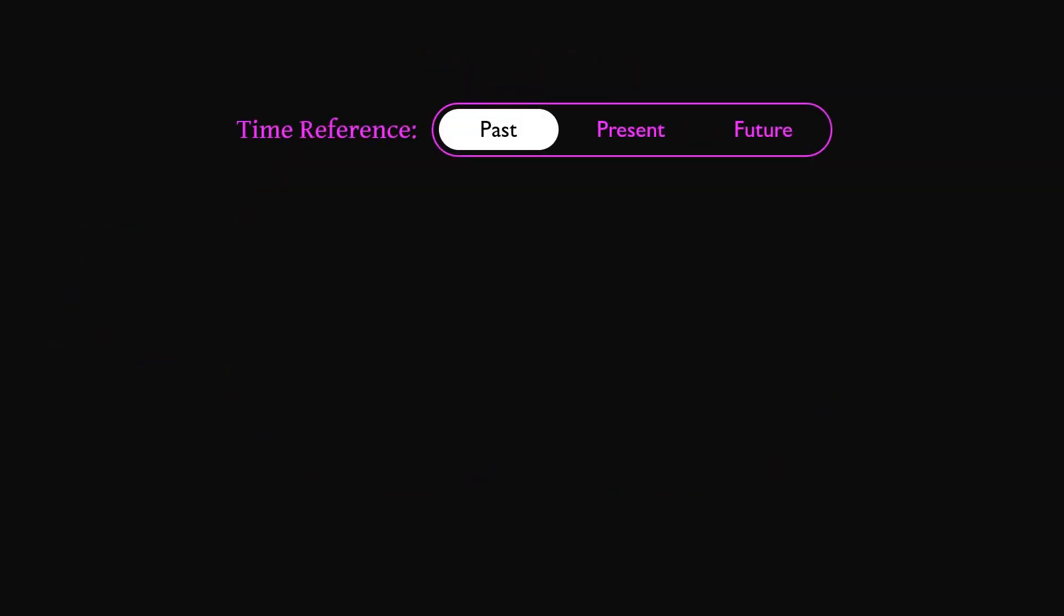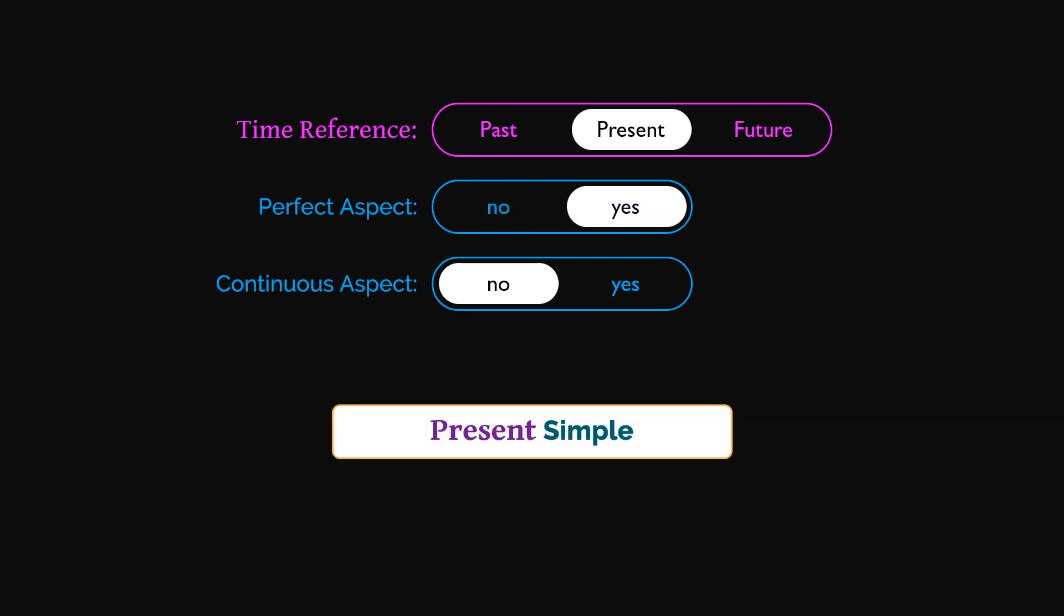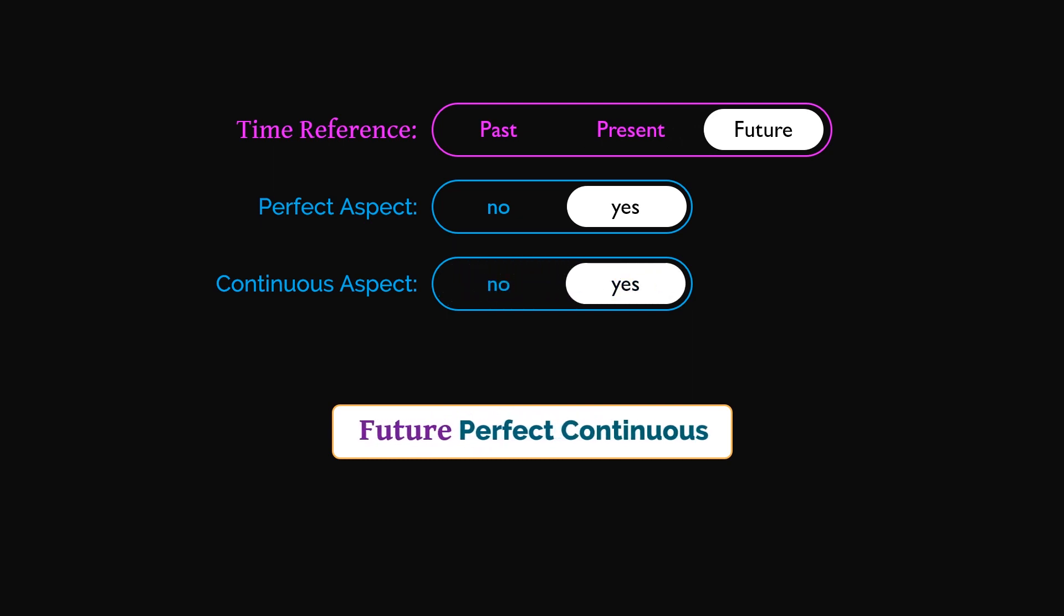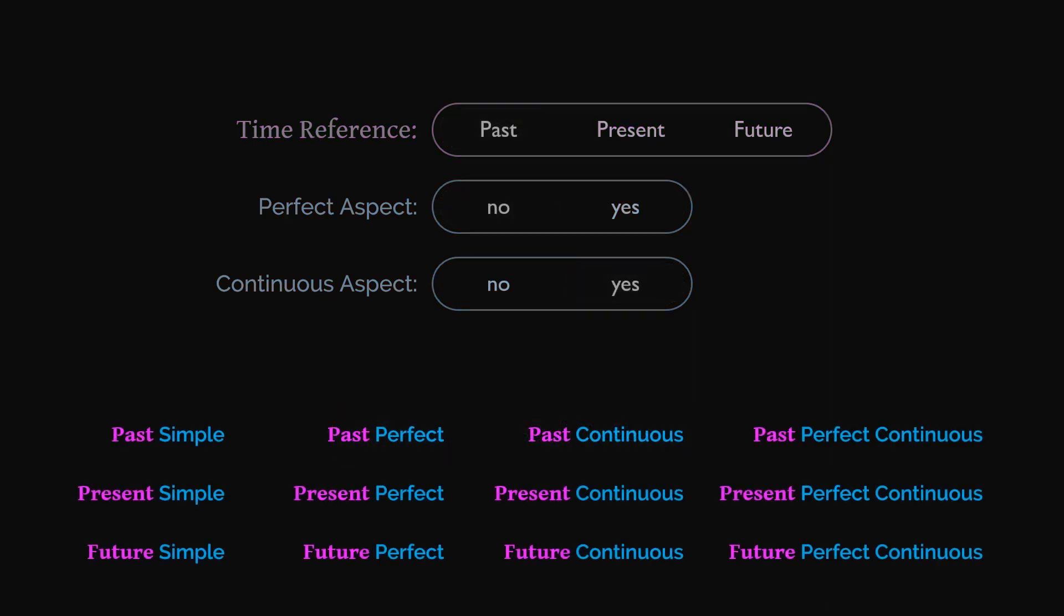Alright, so a verb can have a past, present, or future time reference. It can have the perfect aspect or not, and it can have the continuous aspect or not. When we combine time reference with one, both, or neither aspect, we get our standard English tenses, from future simple to past perfect to present perfect continuous. In fact, there are 12 tense possibilities here.